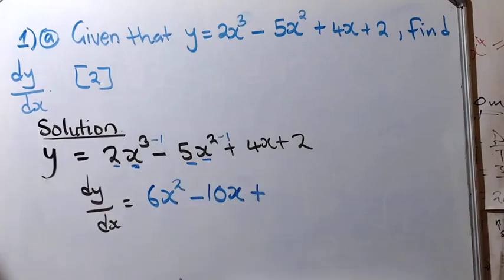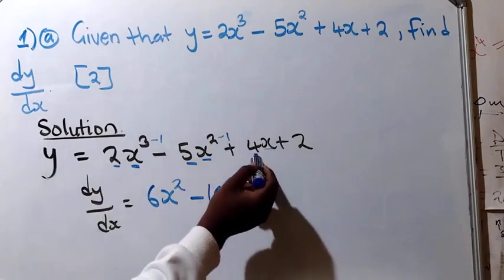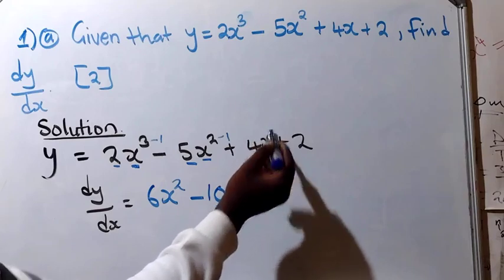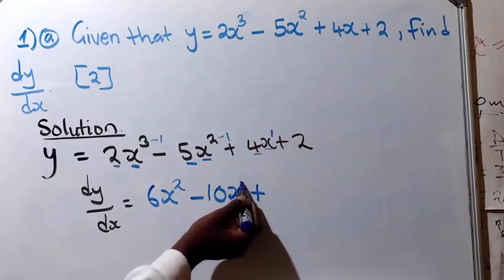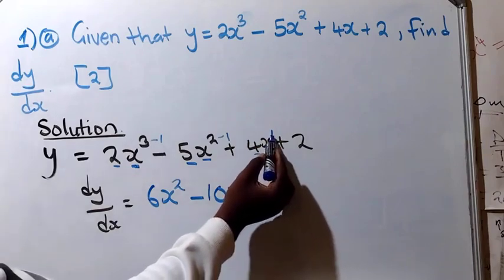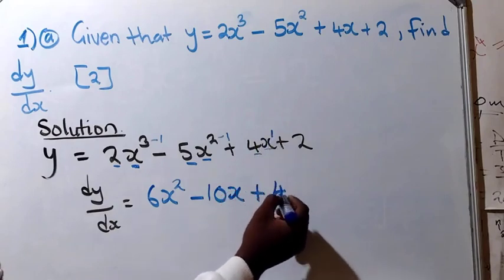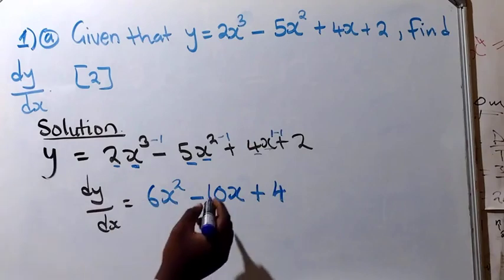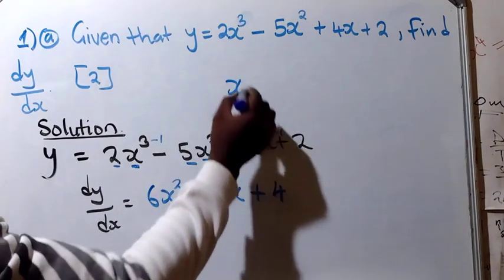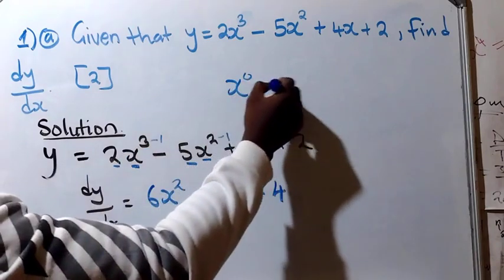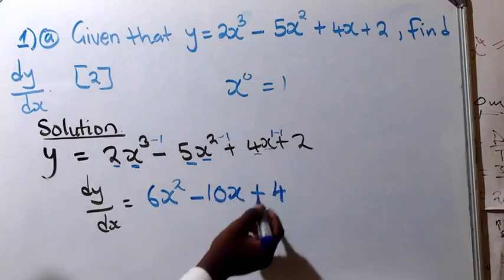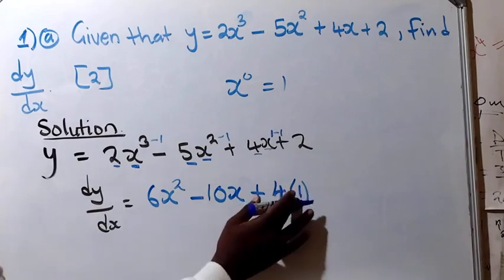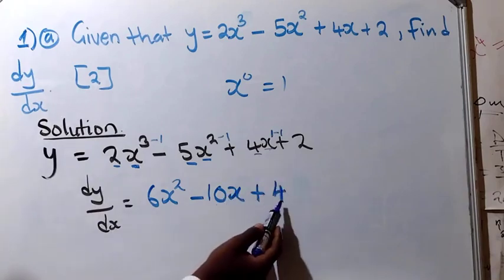Plus — for the third term, we have 4x. The coefficient of x is 4 and the power is 1. So 1 times 4 gives 4. The power is reduced by 1: 1 minus 1 equals 0, so x to the power of 0 equals 1. Therefore 4 times 1 is still 4. You remain with just 4.